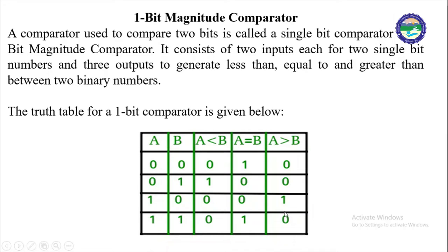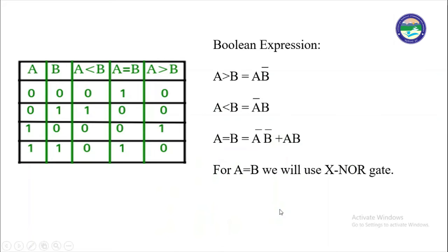So, by using the truth table we will find out the Boolean expression for the three possible outputs: A less than B, A equal to B, and A greater than B. First, we will see the A greater than B case. For this case, we get output 1 only when A is 1 and B is 0. So, B is 0 means B bar. We can write the Boolean expression for A greater than B as A·B̄.